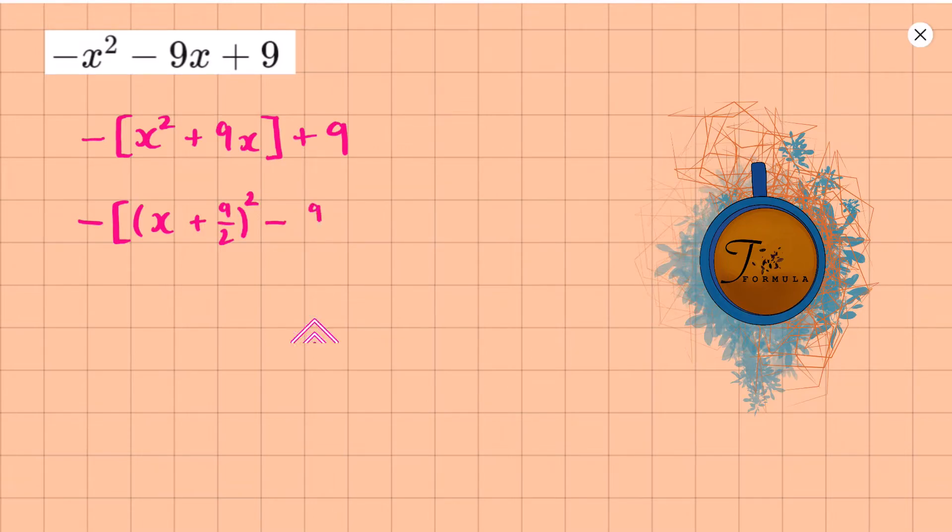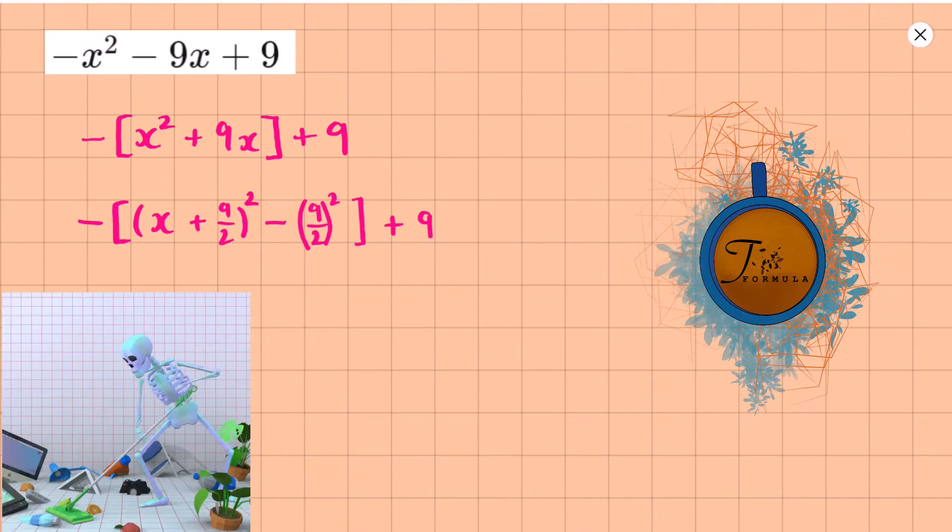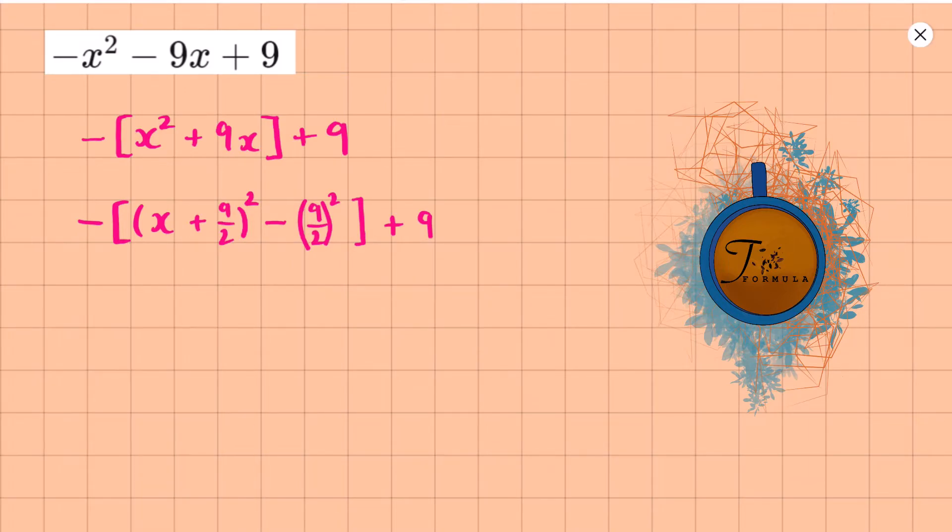So make use of it. And we're going to subtract the nine over two squared, and the plus nine is still there unchanged. So where are we at now? A bit of tidying.